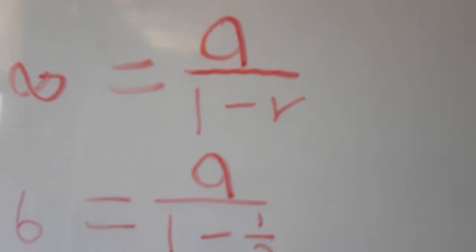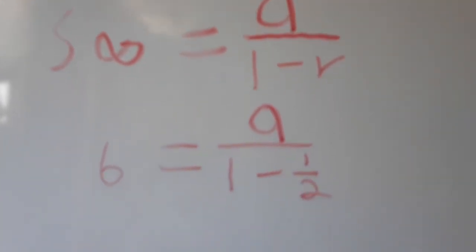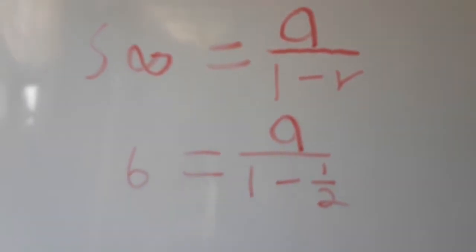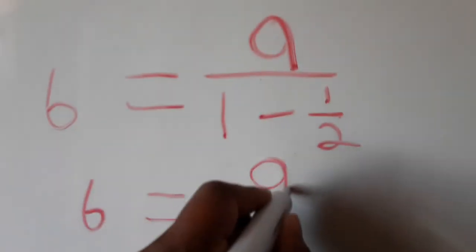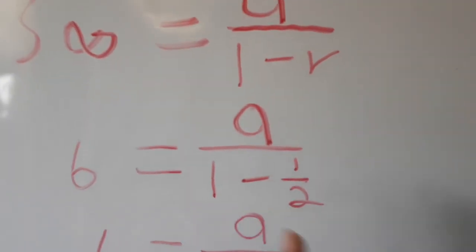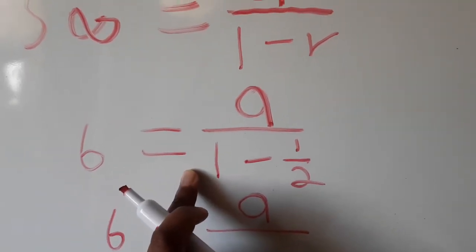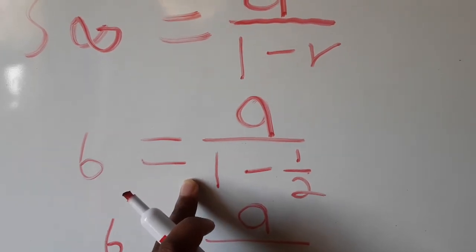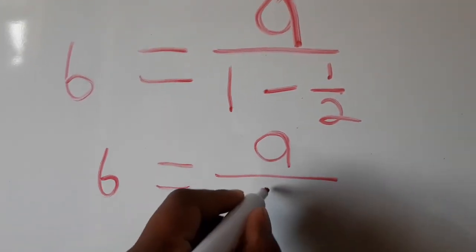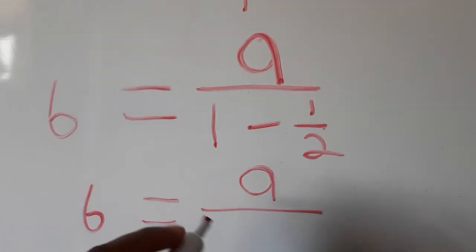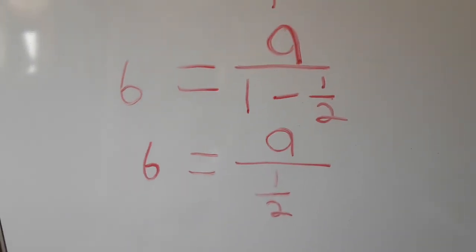This is a Grade 12 exam-type question. We have six equals a divided by one minus one half. Now one minus one half gives us one half, so the denominator is one half.